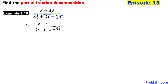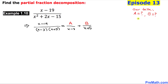Now we are going to find the partial fraction decomposition of this rational expression. These two linear factors mean we're going to have two fractions separated by a plus sign. The first one will have x minus 3 in the denominator, the other will have x plus 5, with constant A on the numerator of the first fraction and constant B on the second. Our task is to find the values of A and B.